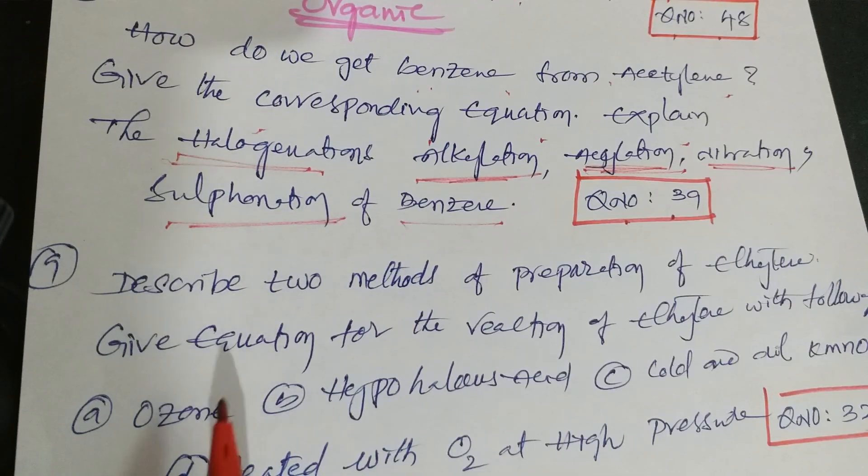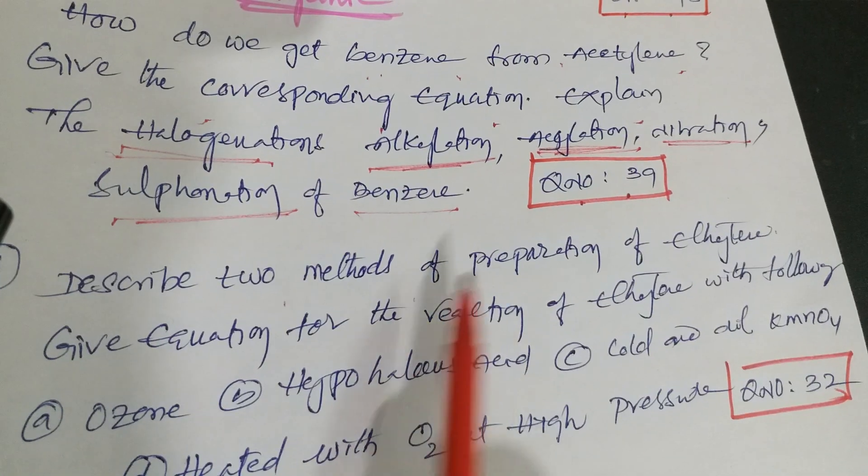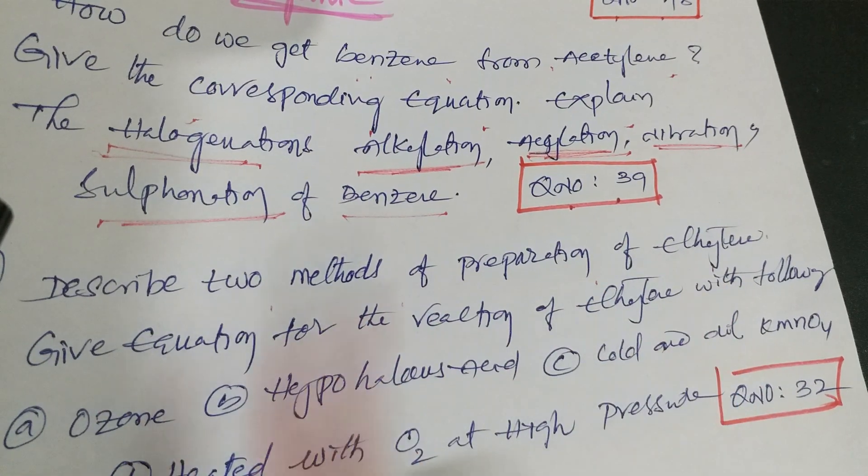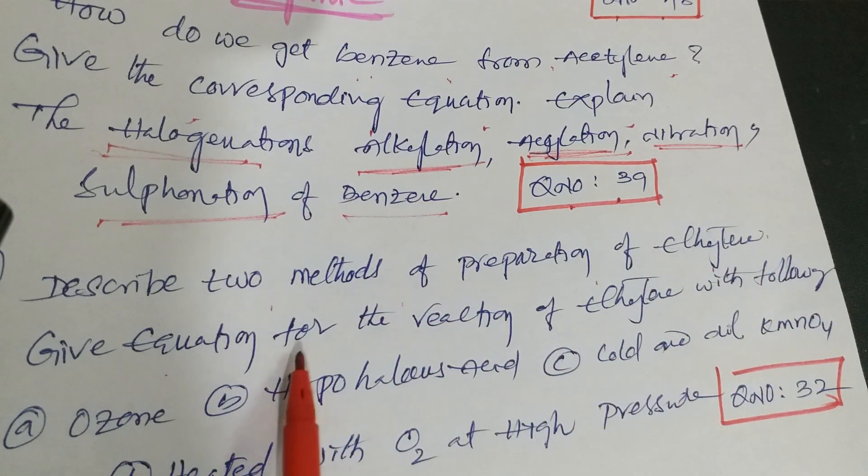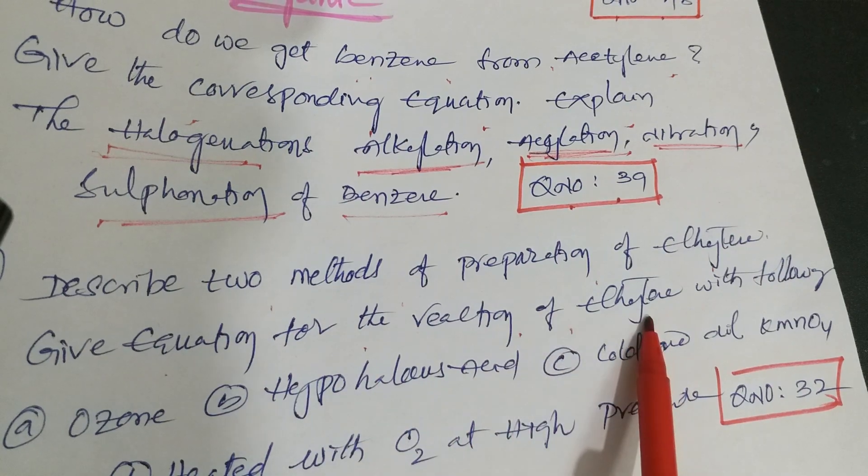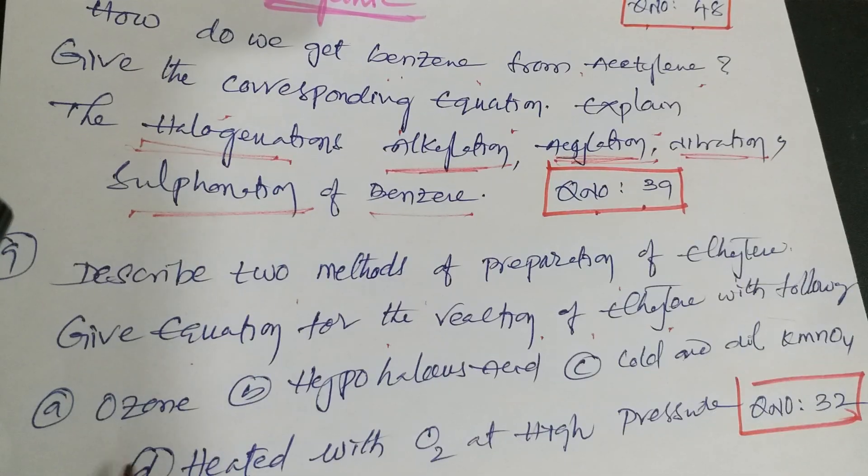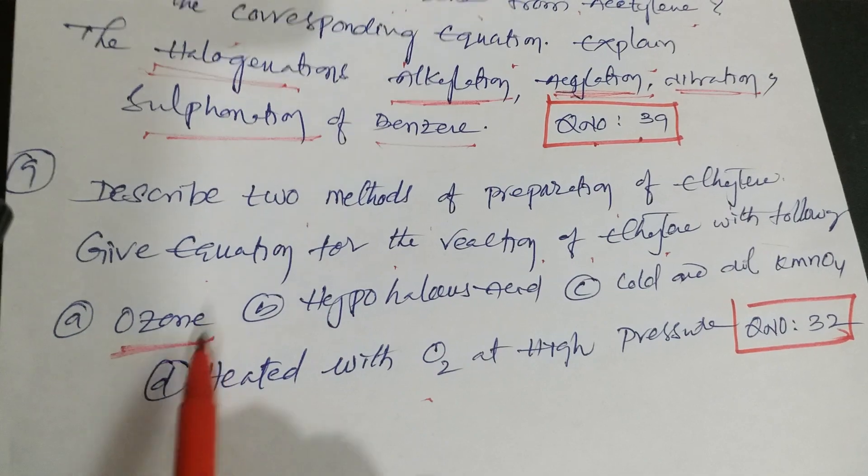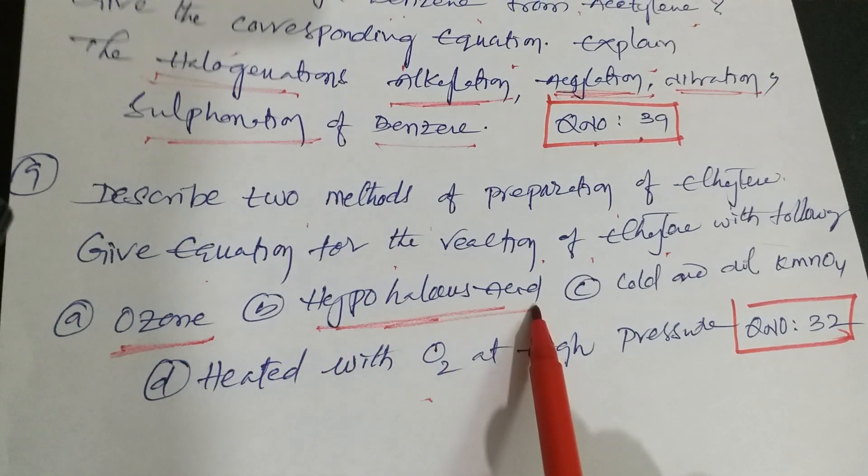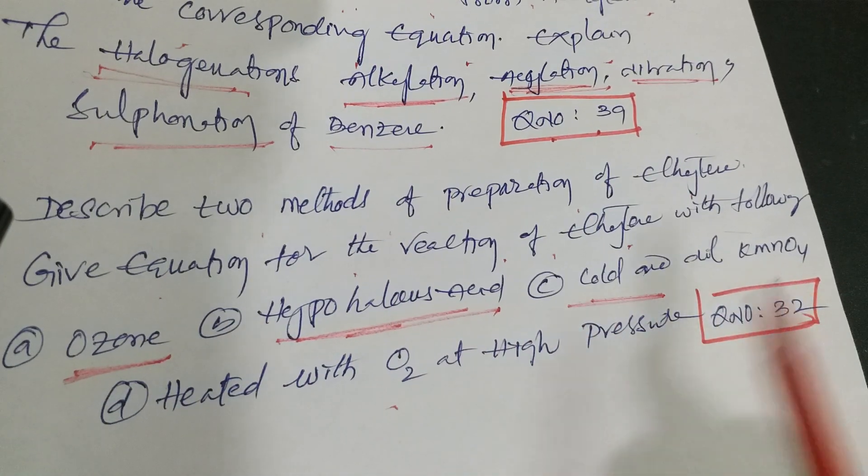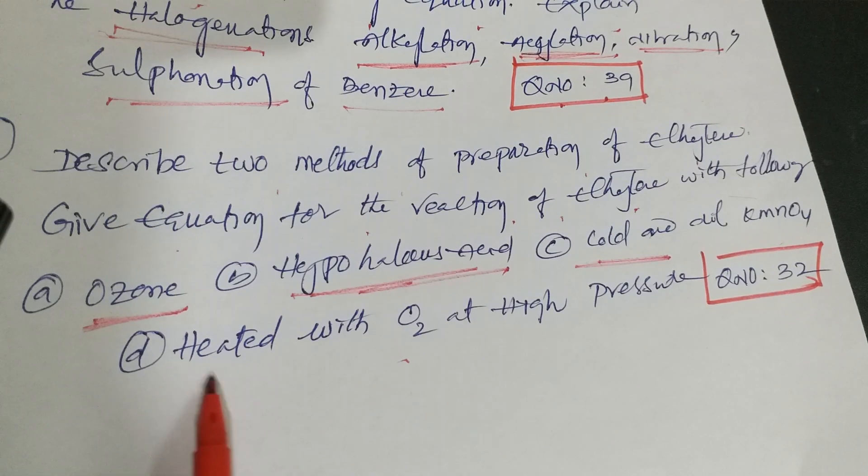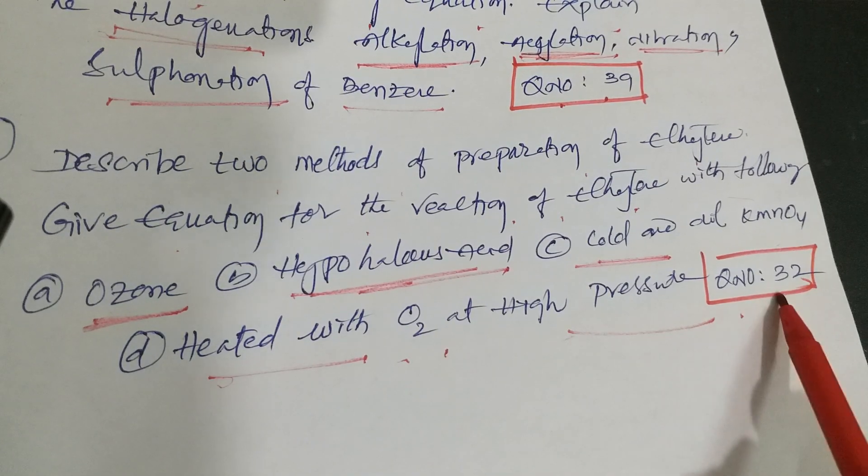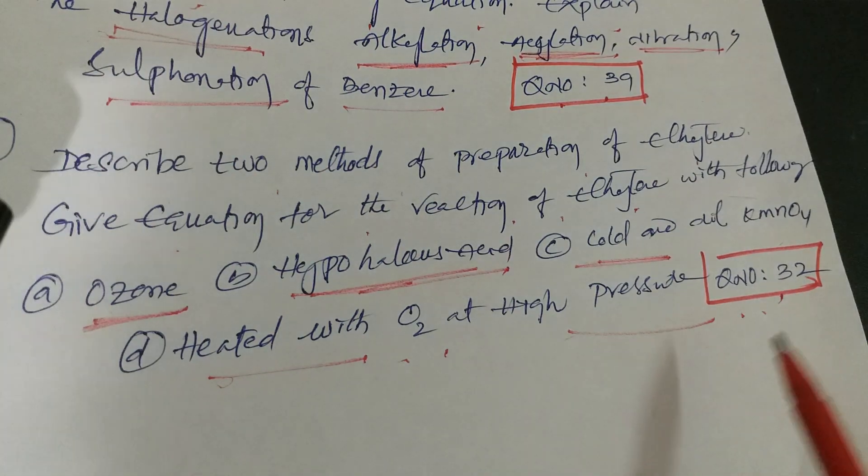Next question: Describe two methods of preparation of ethylene. Give equation for the reaction of ethylene with the following - first one ozone, second one hypohalous acid, third one cold and dilute KMnO4, and fourth one heated with O2 at high pressure. It is question number 32 from Telangana Academy textbook.